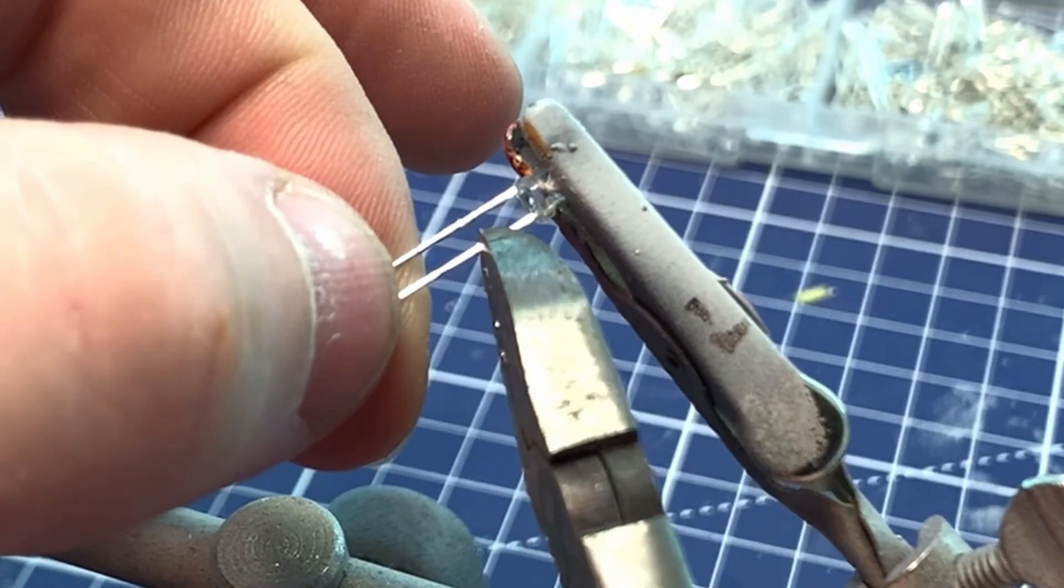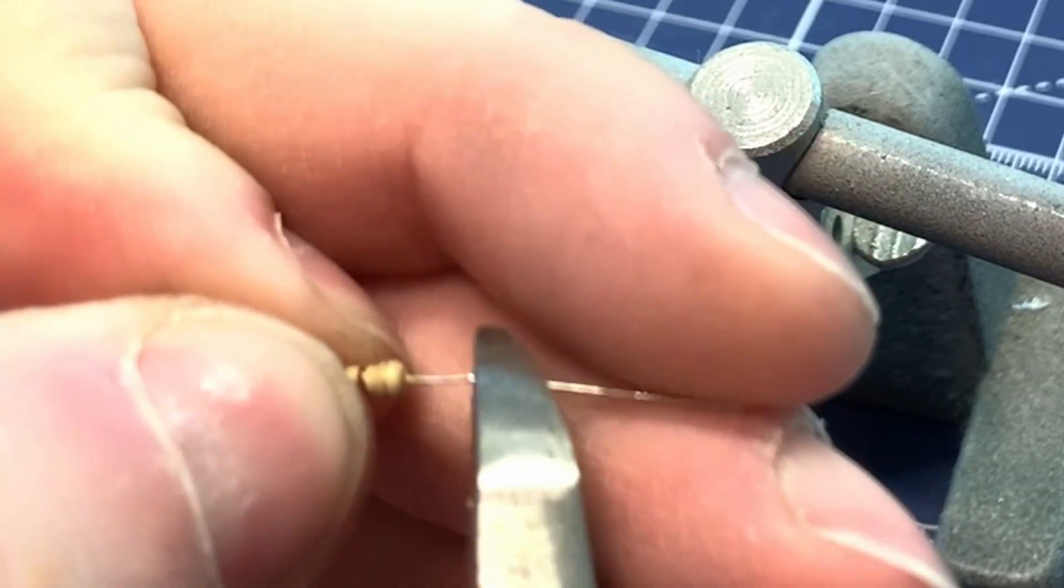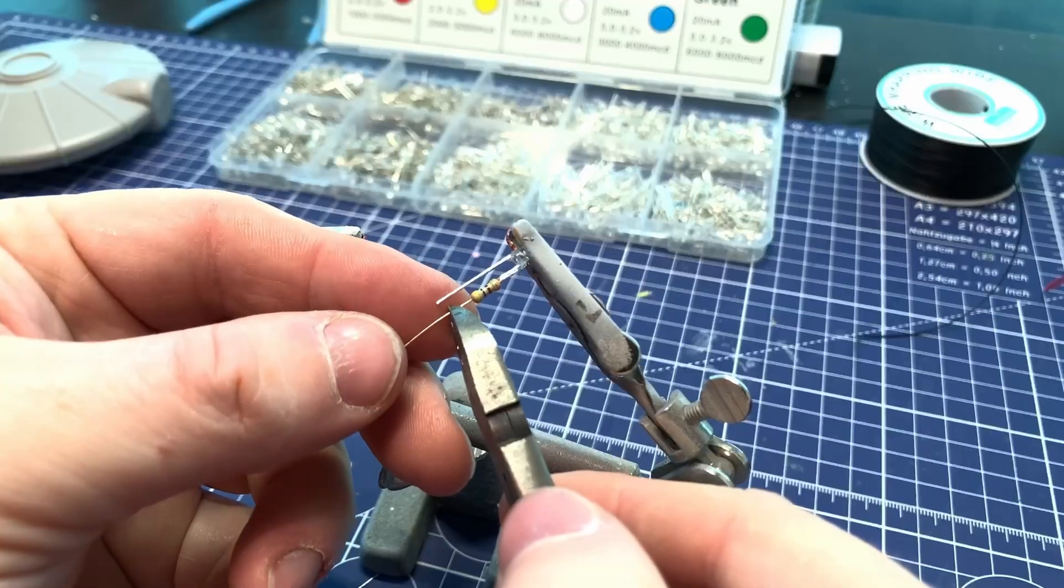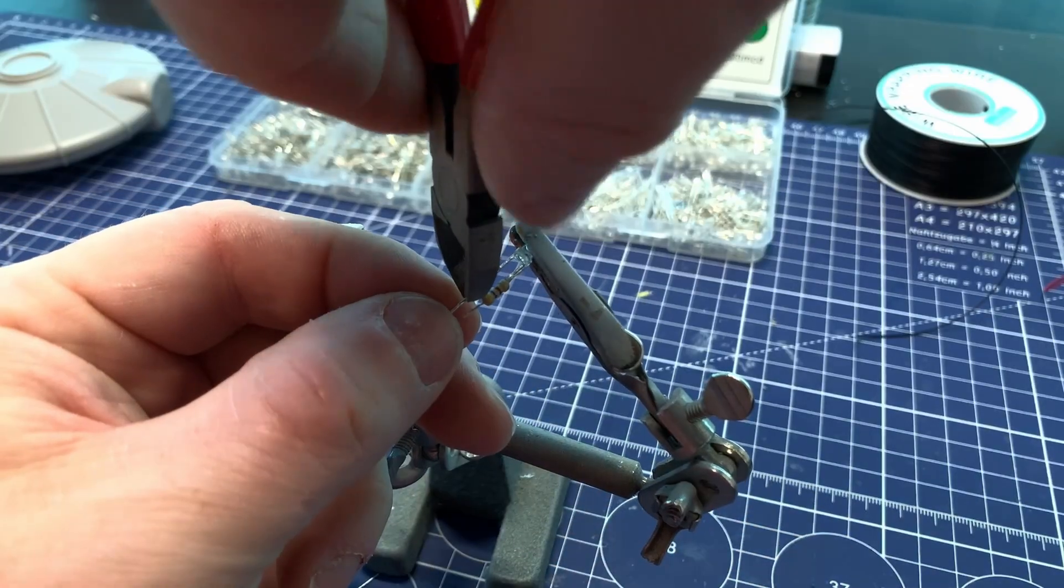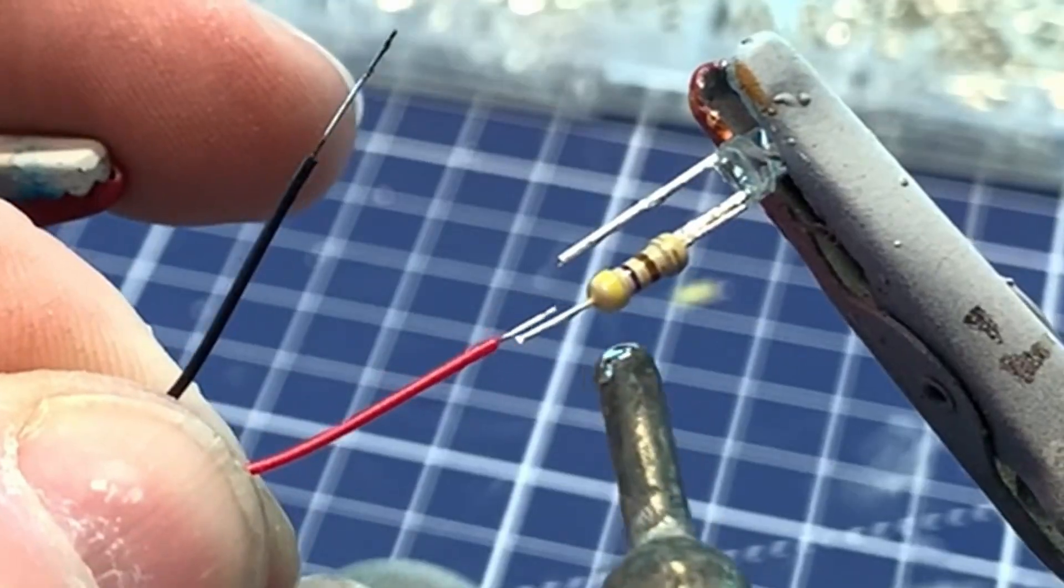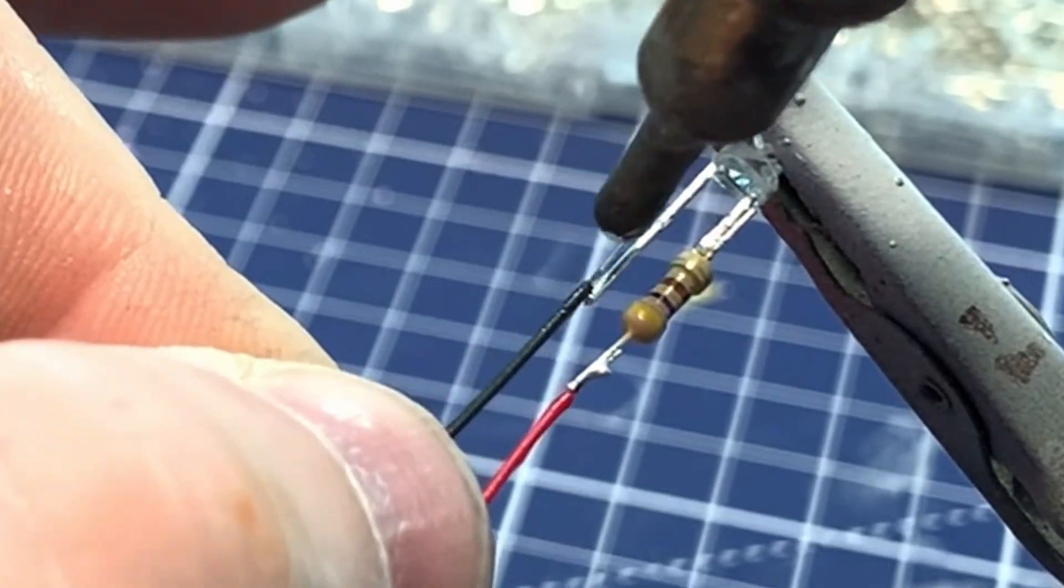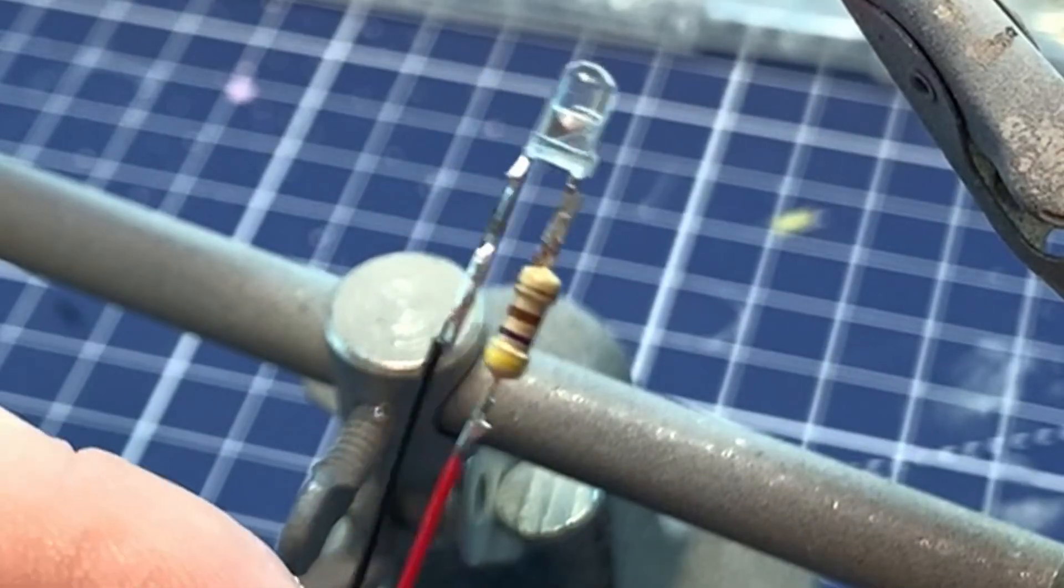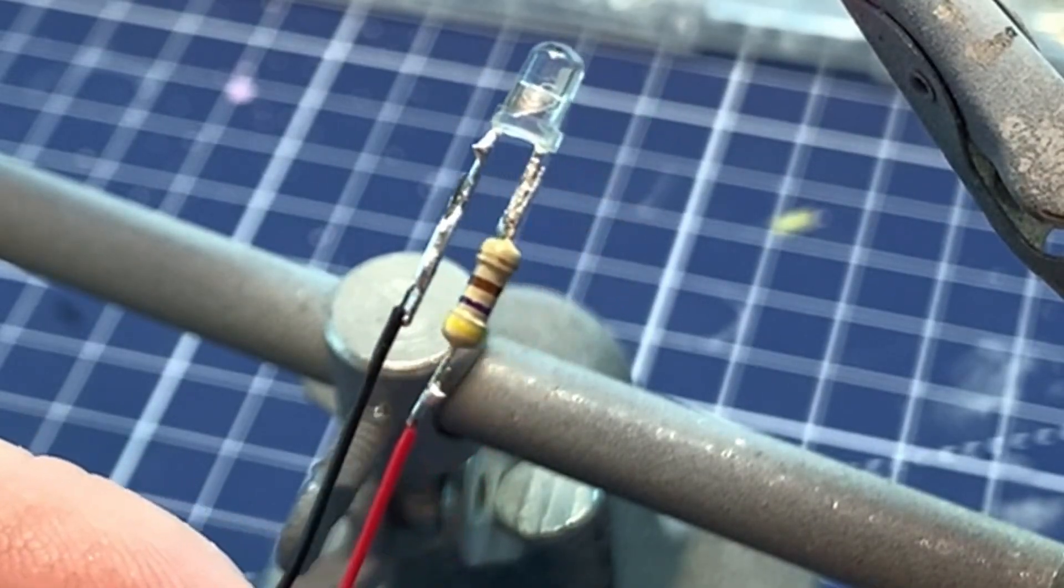Before soldering everything together, I've trimmed down the positive lead on the LED and trimmed down the lead on the resistor. Once they're soldered, trim the leads a bit more, then solder on the wires. This is all to save as much space inside the model as possible. Once you're done, your resistor LED combination should look something like this.